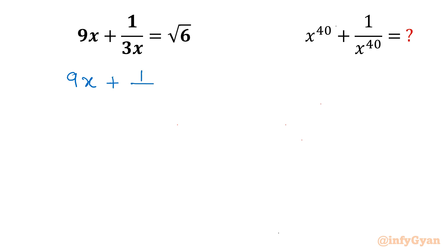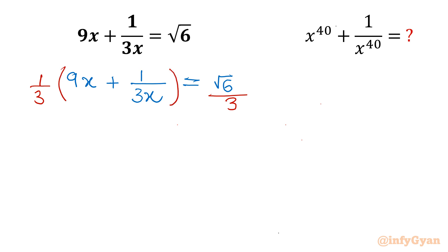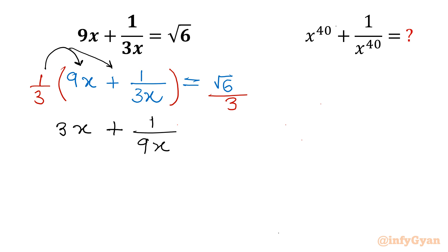9x plus 1 over 3x equal to square root 6. Now I will divide both sides by 3. So here we can write 1 by 3, and we multiply that into the bracket with both terms. So I can write 3x plus 1 over 9x, and the right hand side will become square root 6 over 3.